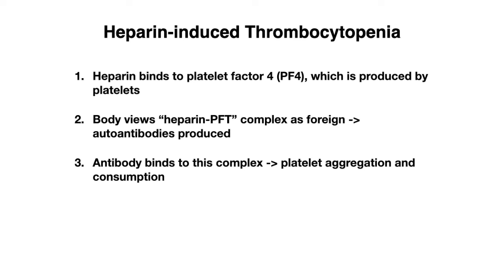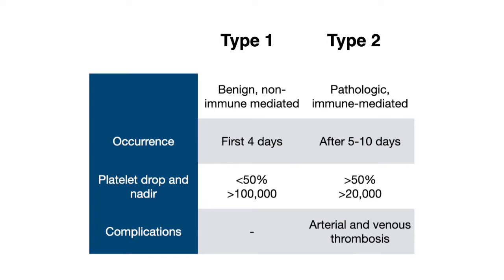When talking about HIT, it's important to know about two types. Type I is the benign, non-immune-mediated type and does not involve those antibodies. It's more of a self-limited response to heparin administration due to some interaction between heparin and platelet molecules. This typically occurs within the first four days of heparin administration. The platelet drop is less than 50% of the platelet count prior to heparin administration, and the nadir — the lowest value — will still be above 100,000.